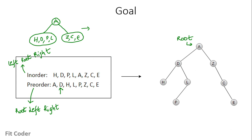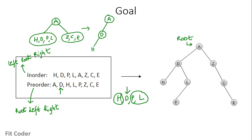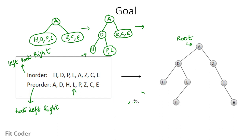We do this for each of the nodes in the preorder traversal. We pick the second node, which is D, and find it in the left subtree. The left subtree is H, D, P, and L. D is here, so the left subtree of D will be H and the right subtree will be P and L. So the root node is A, the next node is D, the left of D is H, and the right of D is P and L. We then pick the next node in the preorder traversal, which is H, but H is alone so there is no need to break it down. We pick the next node, which is L.